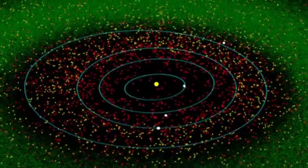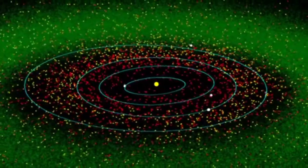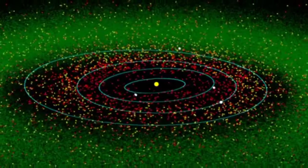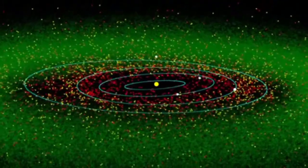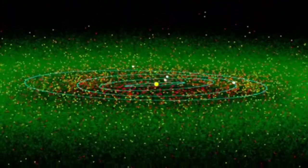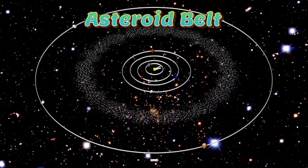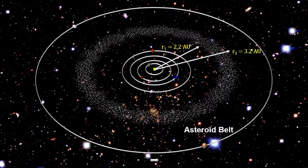Their orbits are perturbed by the gravity of other bodies in the solar system and by the Yarkovsky effect. Significant populations include the asteroid belt — the majority of known asteroids orbit within the asteroid belt between the orbits of Mars and Jupiter.